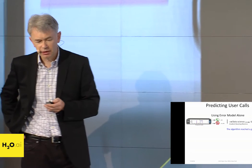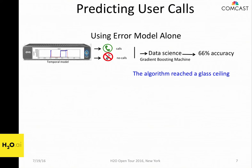For predicting if users are calling, we used a classic data mining approach: we look at the incoming signatures and use a gradient boosting machine, and got about 66% accuracy. I tried all possible approaches — changing the modeling, introducing new features — but there was a glass ceiling. There was no way to go above 66%, which is only slightly better than the 50% random baseline.